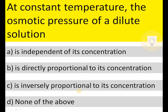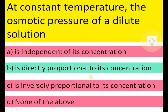At constant temperature, the osmotic pressure of a dilute solution is independent of its concentration, directly proportional to its concentration, inversely proportional to its concentration, or none of these. Osmotic pressure depends on the number of solute particles — that is, the concentration. Therefore, B is the correct answer.